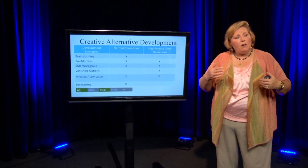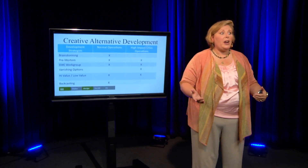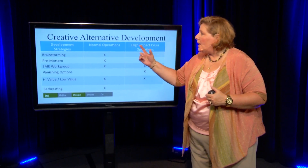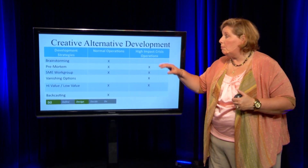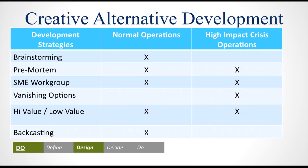You have to come up with some creative alternatives. In this situation, someone has already told us our alternatives: iOS 7 or Android. But if preset parameters hadn't been given, the group might have looked at BlackBerry, the Windows phone, or other platform systems. You still need to go through a process to create alternatives, including brainstorming. Another particularly helpful mechanism, especially in a crisis situation, is called vanishing options.